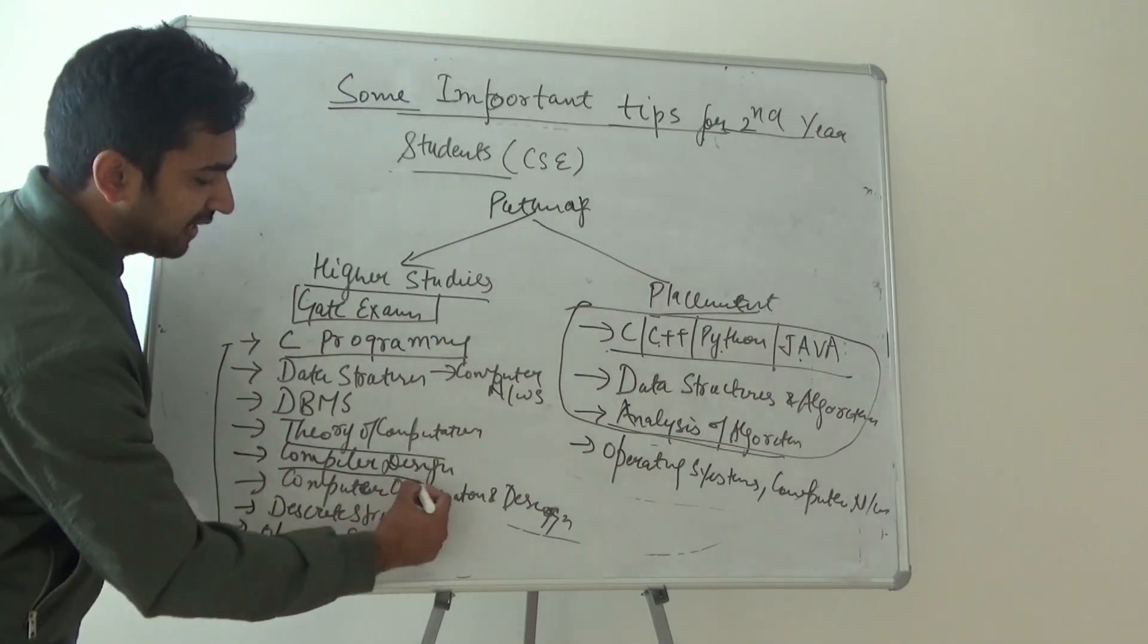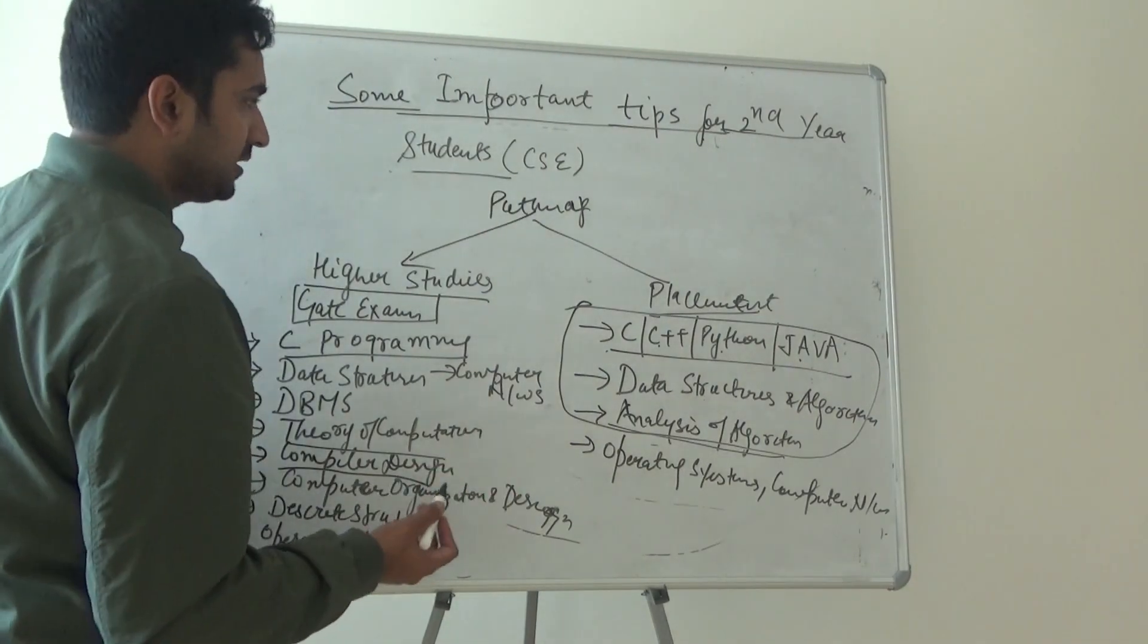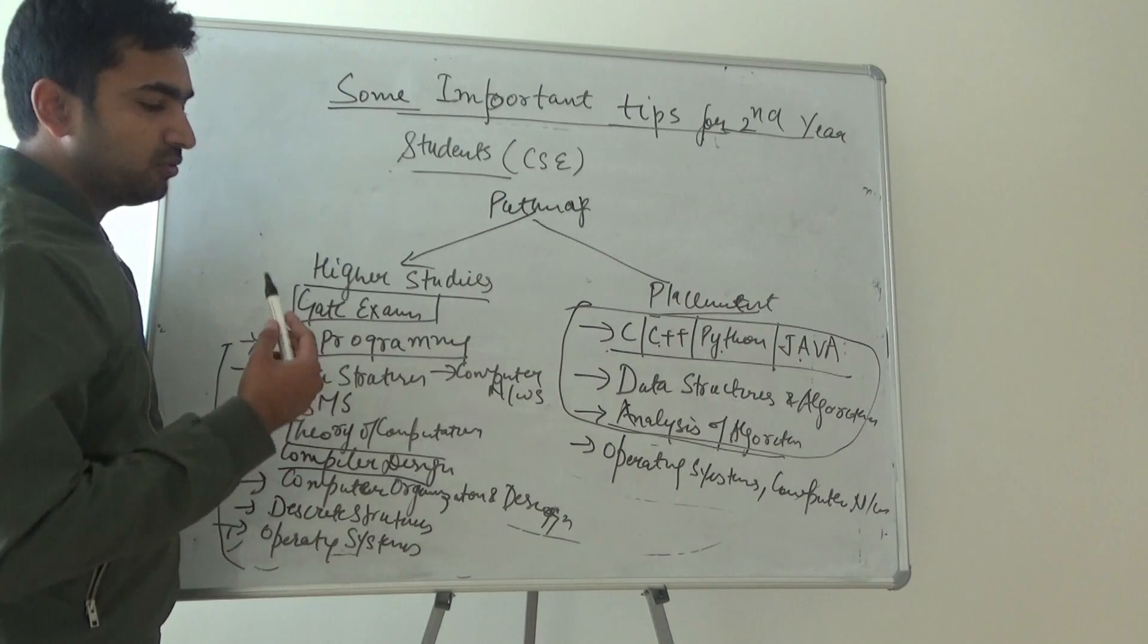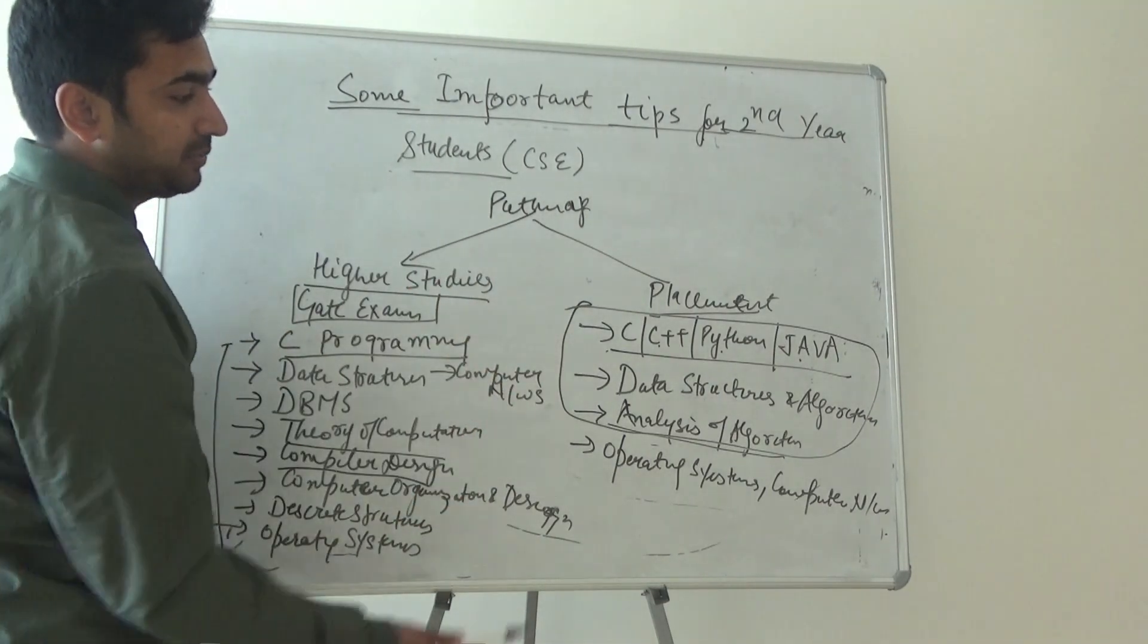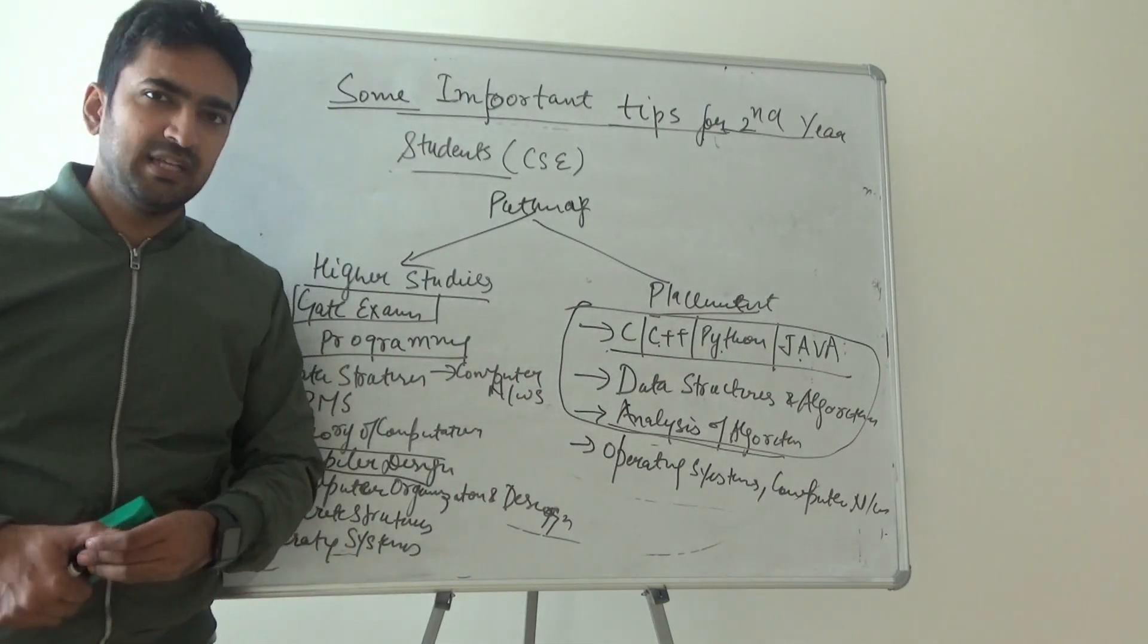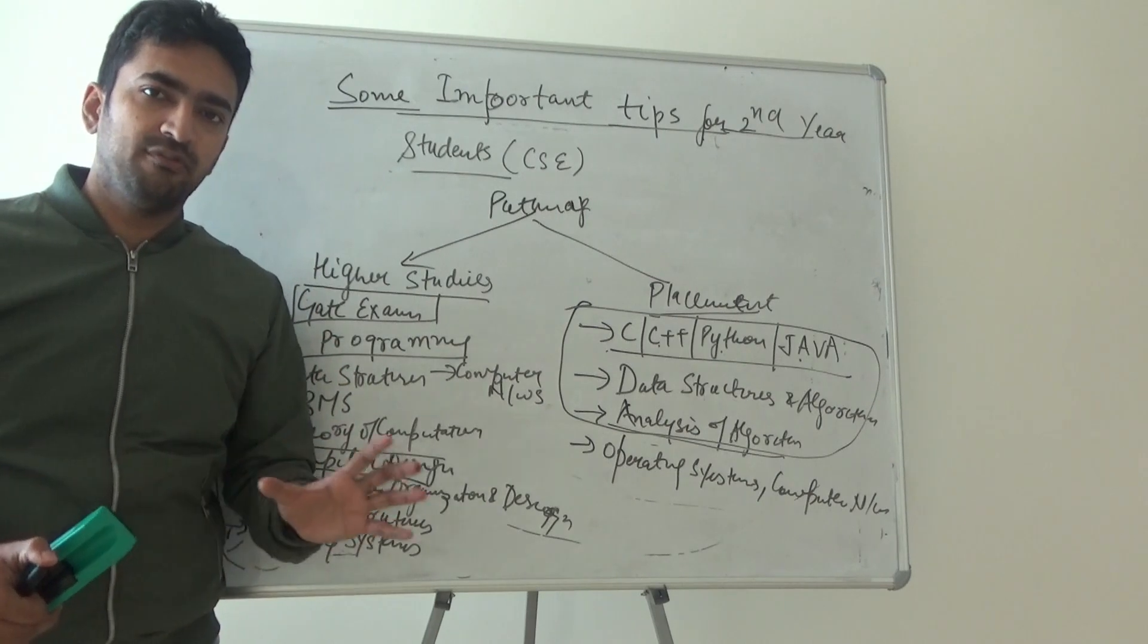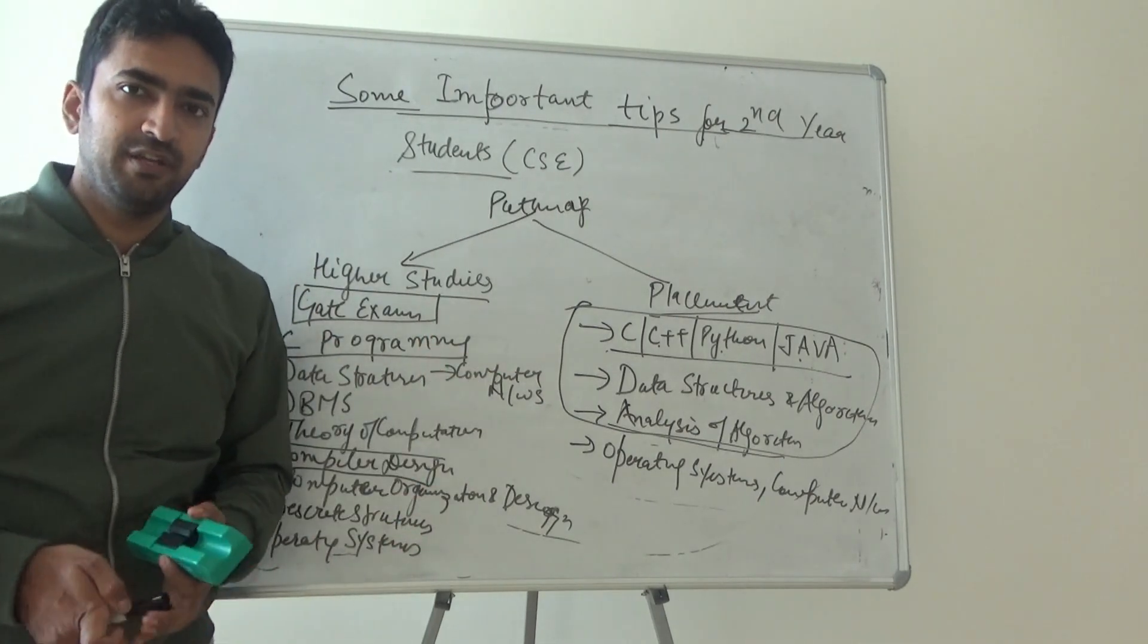These are all very important subjects if you want to appear for GATE examination. Most of them, apart from theory of computation and compiler design, every subject is taught in second year. Don't waste your time—kindly have good expertise in these subjects, especially when you're talking about placement: data structures, C, C++, and analysis of algorithms taught in second year. This is a very important year for all of you. If you like this video, kindly like, share, and subscribe. Thank you very much.